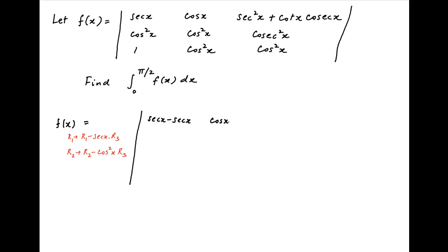Therefore, in the first row, the first element is equal to sec(x) minus sec(x) times cos²(x), which simplifies to sec(x) minus sec(x) = 0. The second element is cos(x) minus cos²(x) times sec(x). The third element is sec²(x) plus cot(x)cosec(x) minus cos²(x) times sec(x).